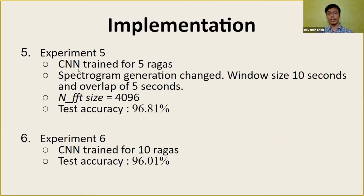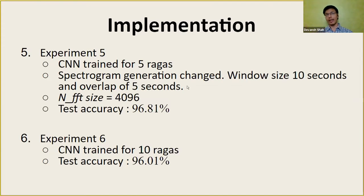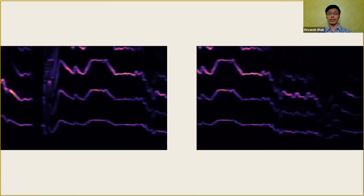For experiment five, we again trained the CNN for five Ragas, but while generating spectrograms, two consecutive spectrograms now have an overlap between them. We did this because features present on the right side of an image should also be present on the left side of the next, so the model does not over-localize features. Due to this overlap, the test accuracy increased a little bit. Experiment six was similar but with 10 Ragas instead of five, and the test accuracy dropped slightly.